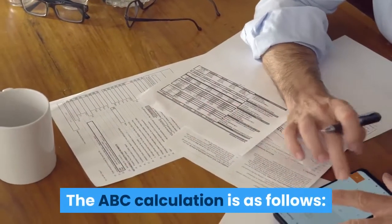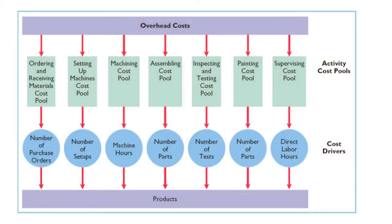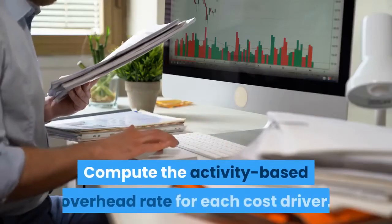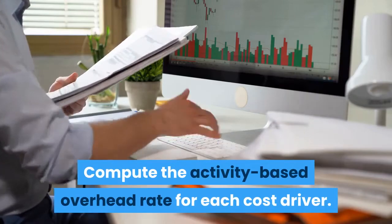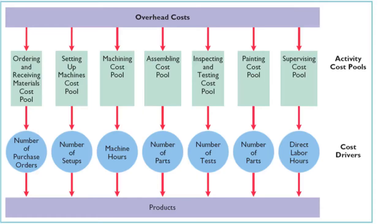The ABC calculation is as follows. Identify and classify the activities involved in the manufacture of specific products, and allocate overhead to cost pools. Identify the cost driver that has a strong correlation to the costs accumulated in the cost pool. Compute the activity-based overhead rate for each cost driver. Assign overhead costs to products using the overhead rates determined for each cost pool, cost per driver.